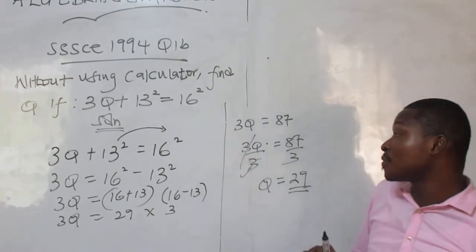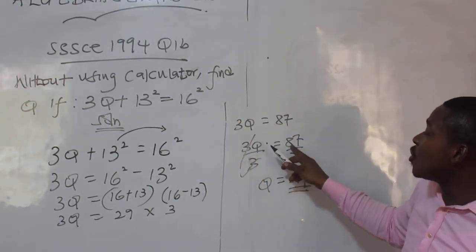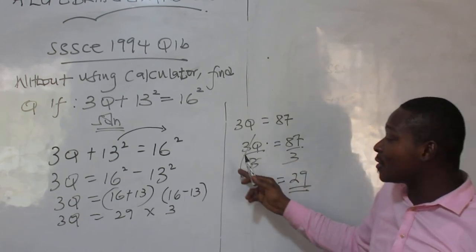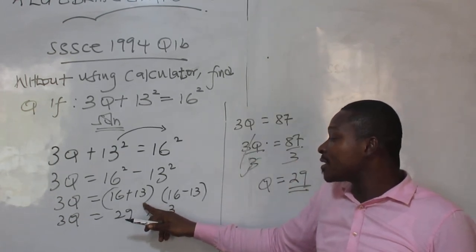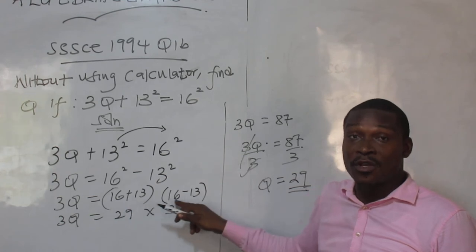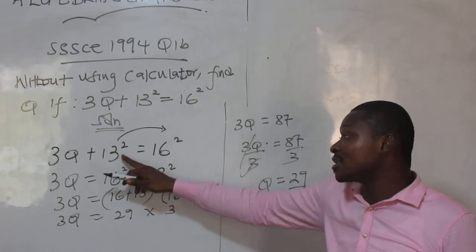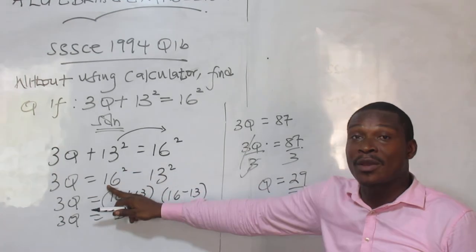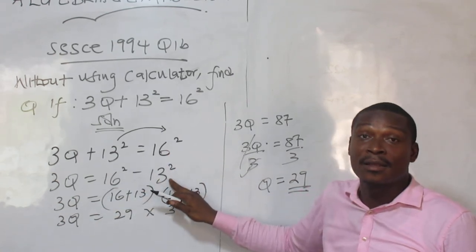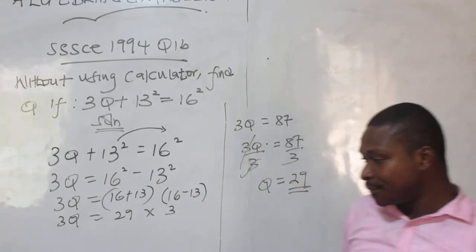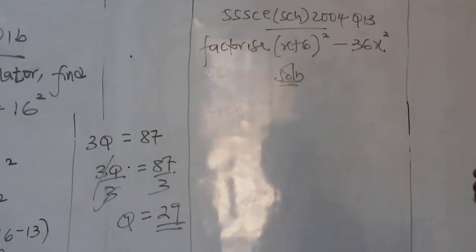So, when I say we are not using calculators, you can still punch. Because, if you don't know 87 by 3, you can still punch here 29. But, they want to tell you to solve it in this way, using difference of two squares, right? Because with calculator, I'll just use 13 squared here, straight away, 16 squared. And, you can use 16 squared here, good.